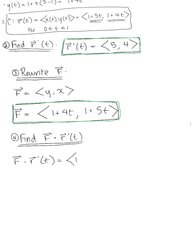So we have the vector ⟨1 plus 4t, 1 plus 5t⟩, and we're dotting this with the tangent vector ⟨5, 4⟩. And so this becomes 5 multiplied by (1 plus 4t), plus 4 multiplied by (1 plus 5t).